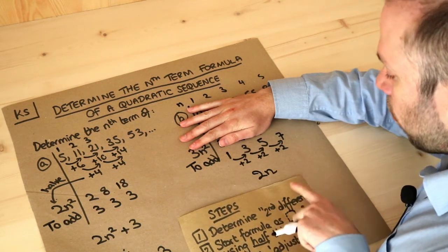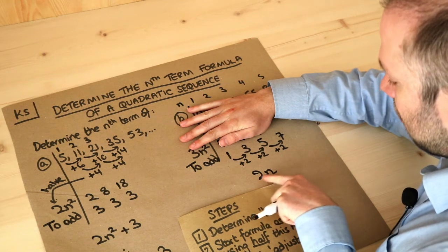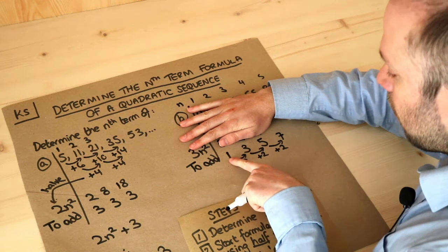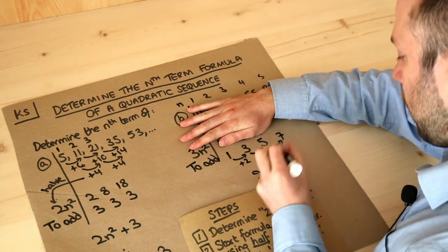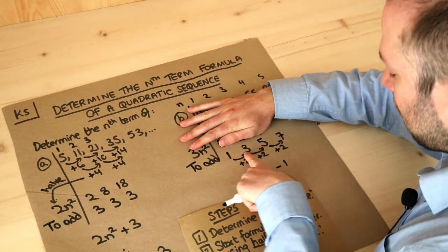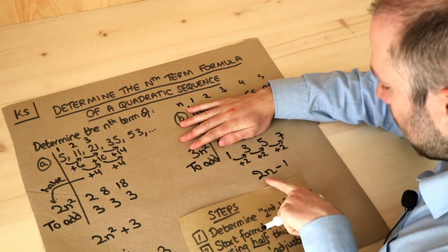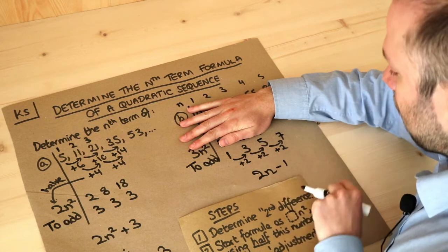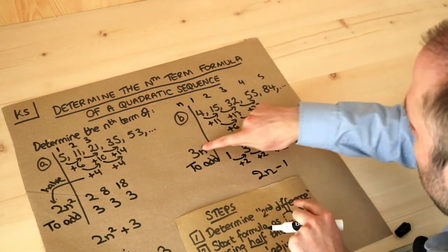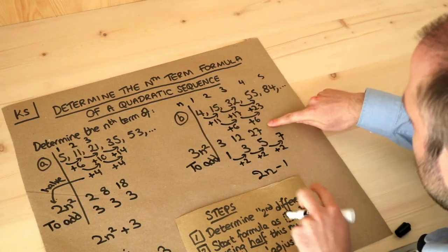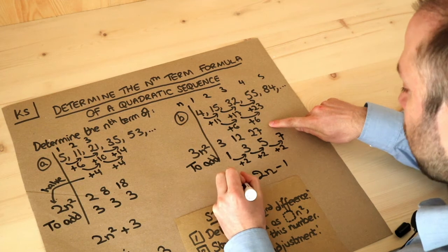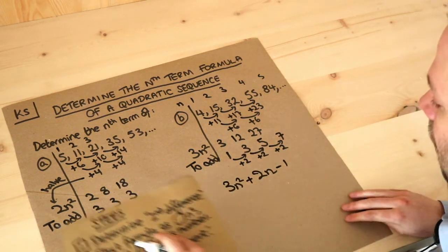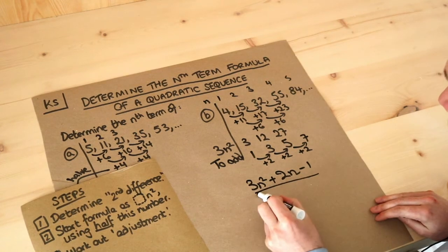The first term of 2n would be 2×1 = 2, but we want 1, so we subtract 1. Checking: the second term is 2×2 − 1 = 3, which is correct. So we started with 3n² and added on this sequence 2n − 1, giving the final answer: 3n² + 2n − 1.